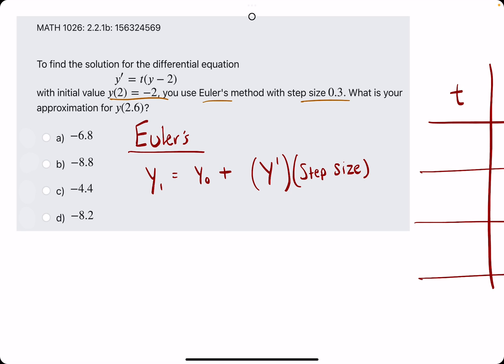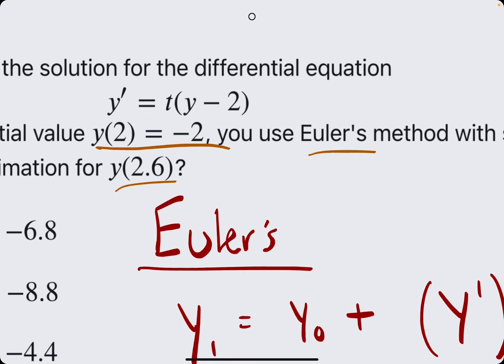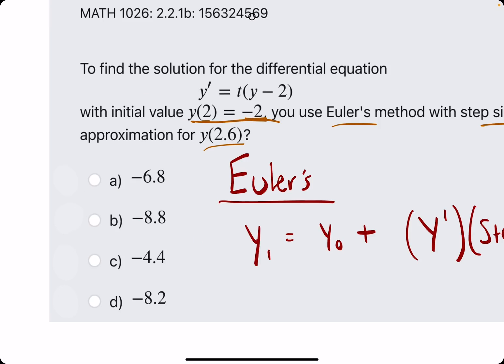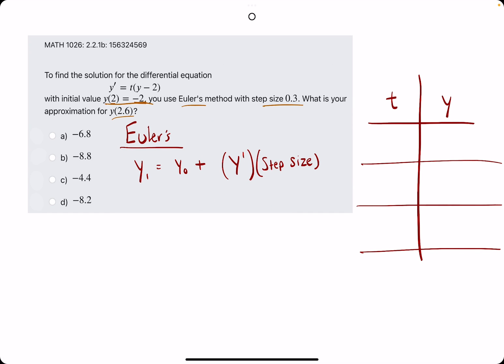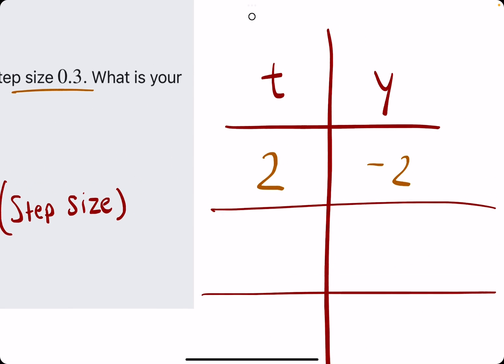So Euler's method with a step size of 0.3. What is your approximation for 2.6? Let's start with what we know. We know that when the t value is 2, this input value is our t value, the output, the y value is negative 2, which means we know that when t is 2, the y value is negative 2.